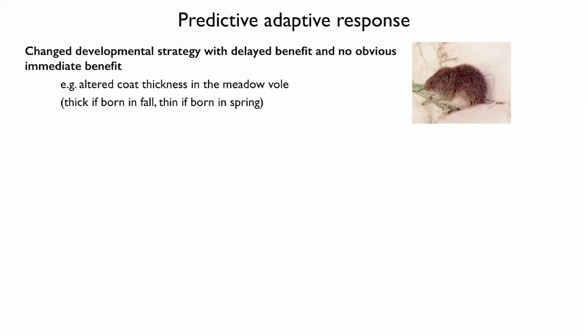The predictive adaptive response idea, being intensively studied by Peter Gluckman and his group, is basically a developmental strategy changed by an environmental signal with a delayed benefit and no obvious immediate benefit. For example, meadow vole offspring will have a thicker coat if born in the fall and a thinner coat if born in the spring. The thickness of the coat the baby voles develop is not immediately adaptive — it is there in anticipation of what the temperature will be in a month or two. The coat thickness is changed by developmental signals the mother receives and passes on to her offspring.